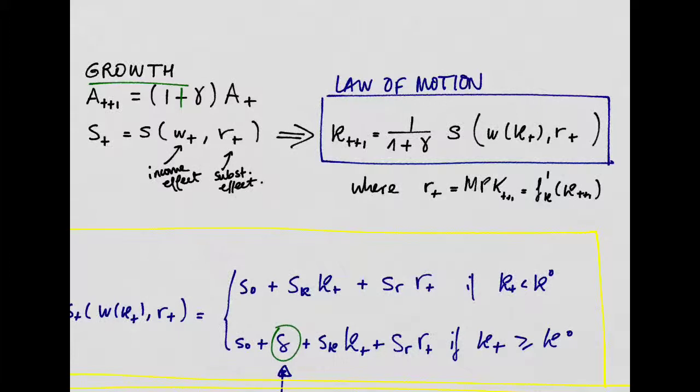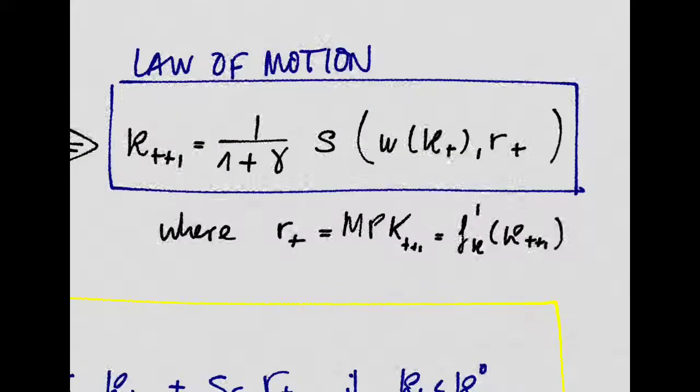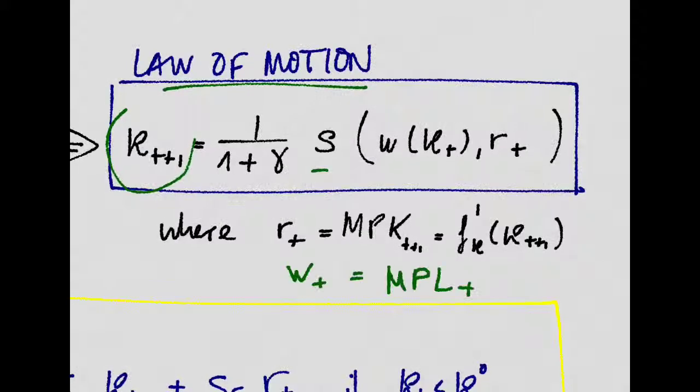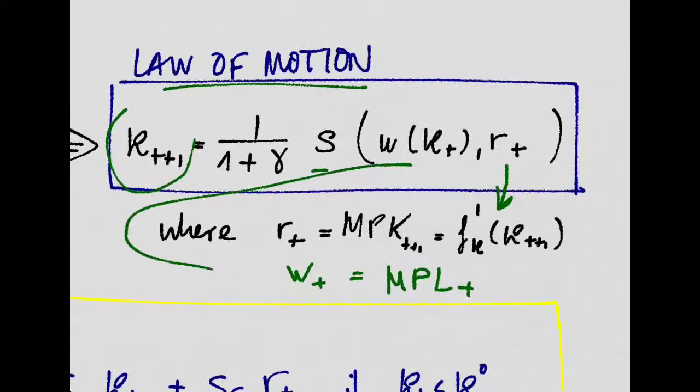To do this, they model an economy that is growing at a fixed rate, and then they derive a typical savings function, which depends on the income effects coming from the wages and the substitution effects coming from the interest rate. And that takes you to the usual law of motion, in which your capital in the next period is going to be a function of those savings. And you can just back out the interest rate by the MPK and the wages by the marginal product of labor.